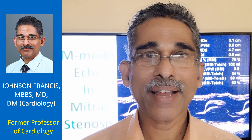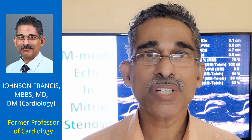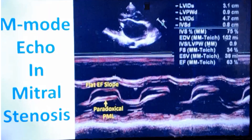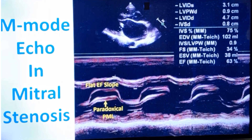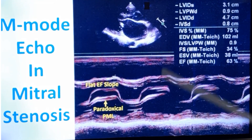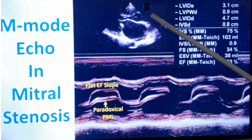I am going to discuss M-mode echocardiogram in mitral stenosis. M-mode is time-motion mode. It is a one-dimensional mode with high temporal resolution. This is the M-mode echocardiogram in mitral stenosis, guided by a two-dimensional image.